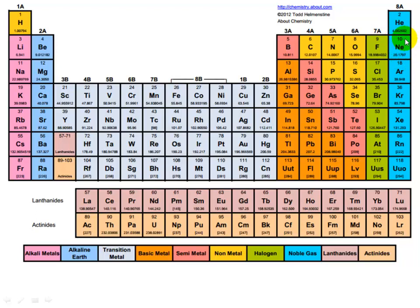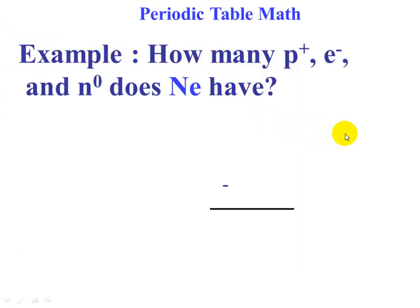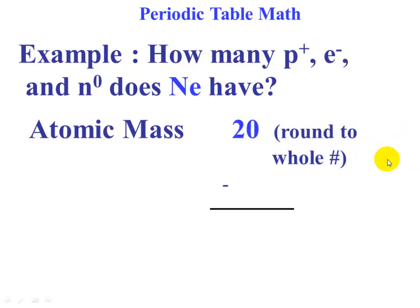The number 10 is the atomic number, and the mass is 20.1797. What we do is take the mass and round it to the nearest whole number, so we have 20. We then subtract the atomic number, which was 10.